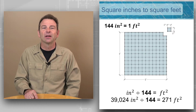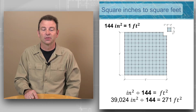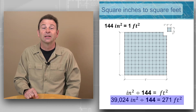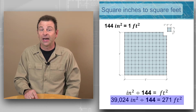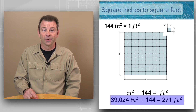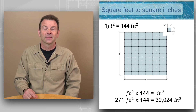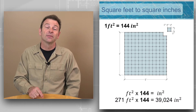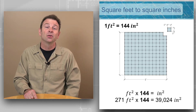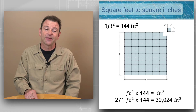Here's an example of square inches to square feet conversions. So 39,024 square inches divided by that factor of 144 is going to equal 271 square feet. If you wanted to go the other way and convert square feet to square inches, you could use that same factor.